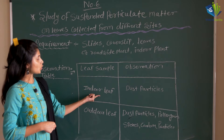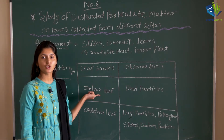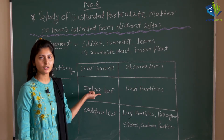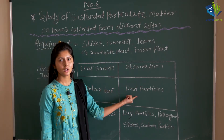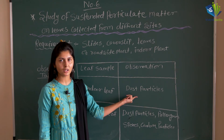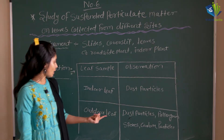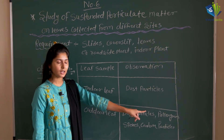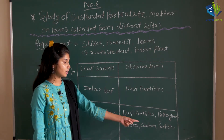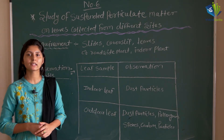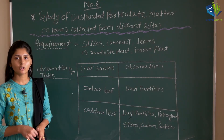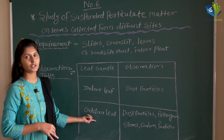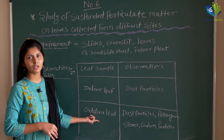The indoor plant is a covered plant, so it doesn't have much particulate matter except dust particles. At most, we can get dust particles on this kind of leaf. While on the outdoor or roadside leaf, we can get dust particles, pollen grains or spores, and also carbon particles or other pollutants as particulate matter.